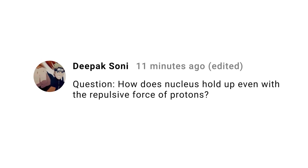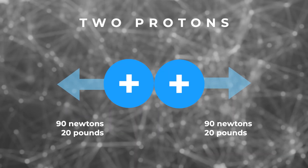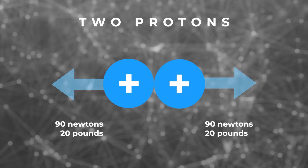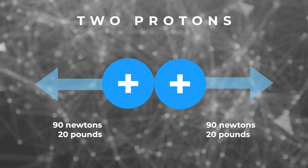Deepak Soni asks how the nucleus can exist in spite of the electric repulsive force between protons. That question has a long history — a similar observation was the first indication that there might be forces beyond electromagnetism and gravity. Two protons touching each other in the nucleus feel a repulsive force of about 90 newtons, or 20 pounds, or the weight of 10 kilograms. The only way they remain stationary is if there is an even stronger force holding them together. Historically this was called the nuclear force, but it's now called the strong force. It's a hundred times stronger than electromagnetism, and it's why atomic nuclei are stable.